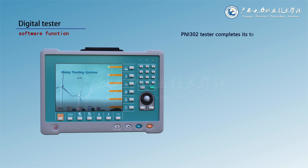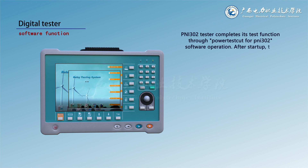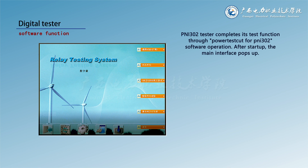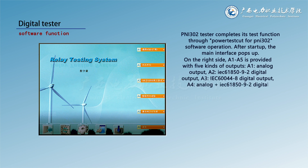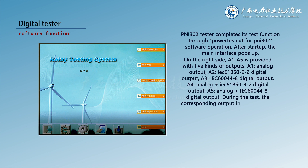The NIE 302 tester completes its test functions through the PowerDiskCut for NIE 302 software. After startup, the main interface pops up. On the right side, A1 through A5 provides five kinds of outputs: A1 analog output, A2 IEC 61850-9-2 digital output, A3 IEC 60044-8 digital output, A4 analog plus IEC 61850-9-2 digital output, and A5 analog plus IEC 60044-8 digital output. During the test, the corresponding output in A1 through A5 can be selected according to the input type of the equipment to be tested.